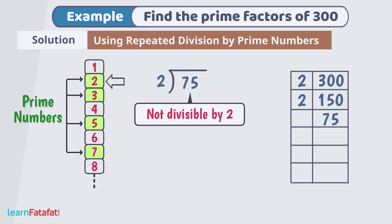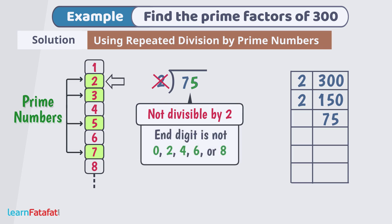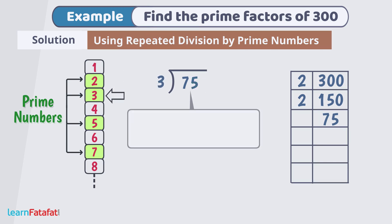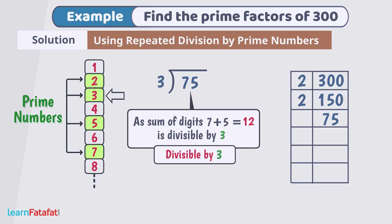75 is not divisible by 2 as number does not have last digit from 0, 2, 4, 6 or 8. Next prime number is 3. Since sum of digits of 75 is 7 plus 5 equals to 12 which is divisible by 3. So, 75 is also divisible by 3.